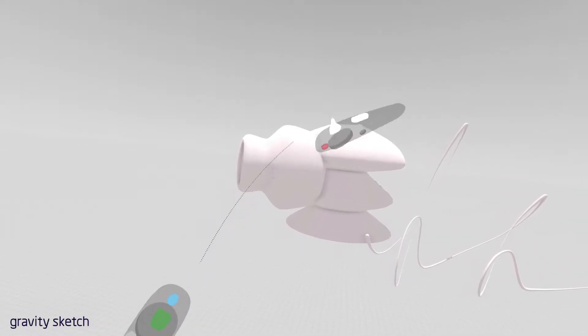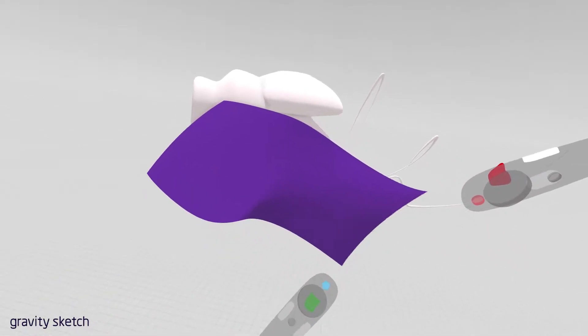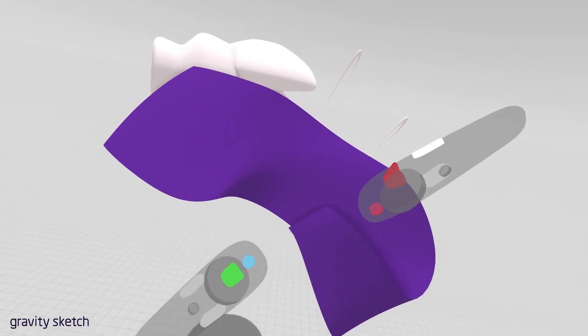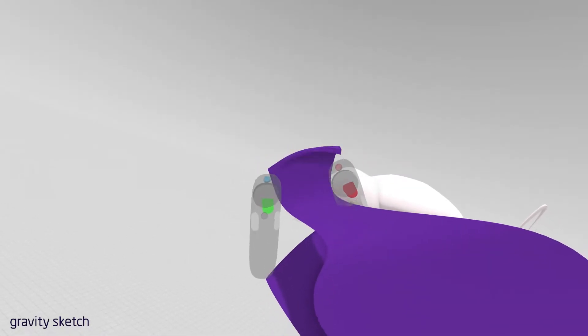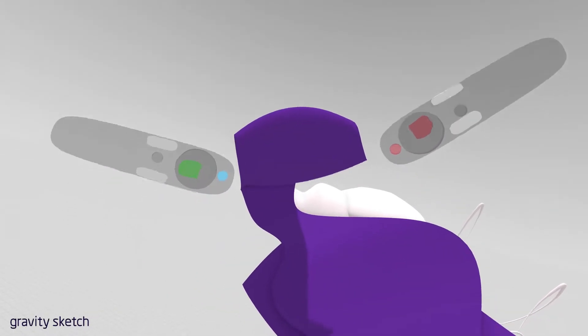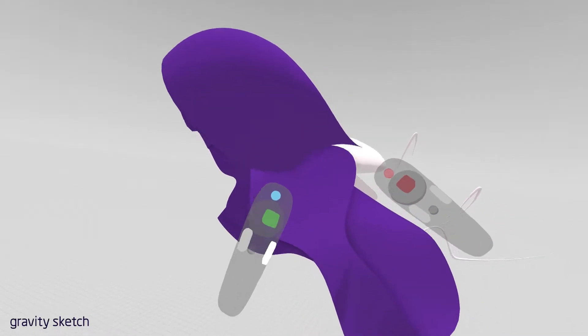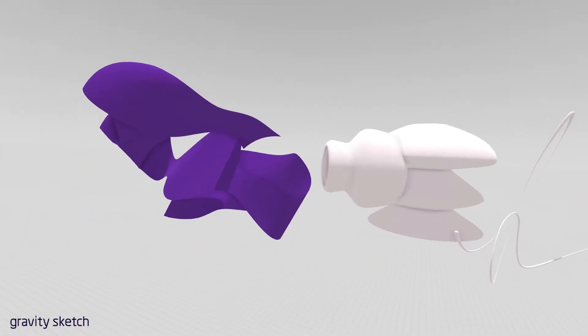And then when you pull your drawing hand's trigger, you'll actually start to create a surface. Now as you move your arms together and apart, you can influence the thickness. And if you pitch your arms, you can actually influence the curvature.